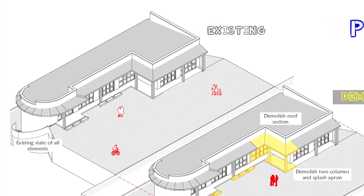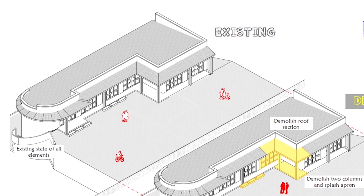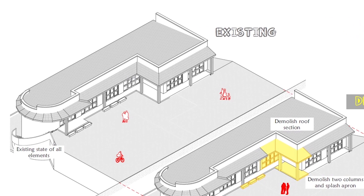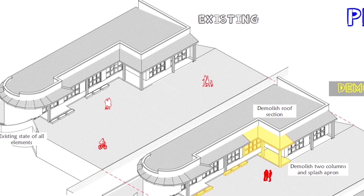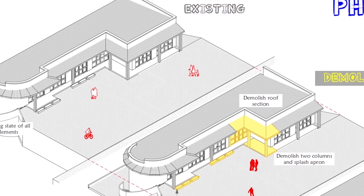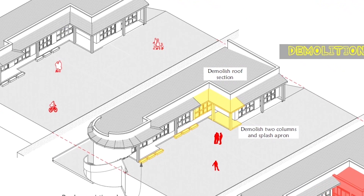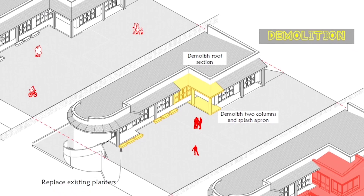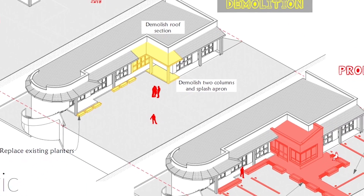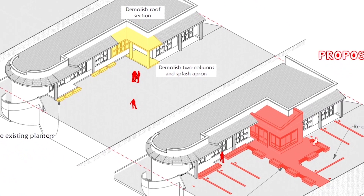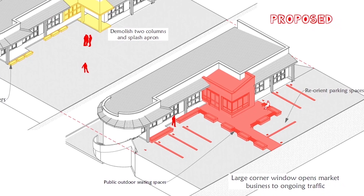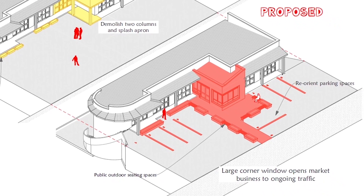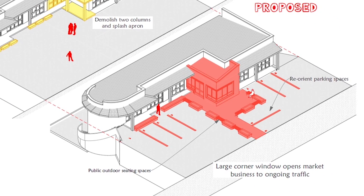Hello everyone, today we will tell a story — not just with words but with isometric diagrams. The moral of this story is transformation: transformation of an existing building through phases of demolition all the way to proposed new construction. So let's get started.